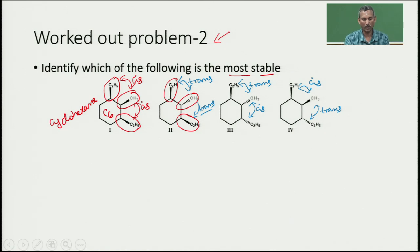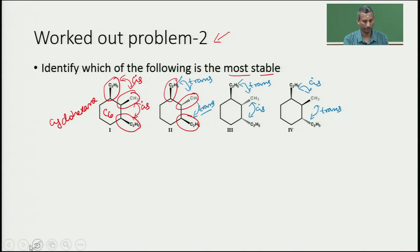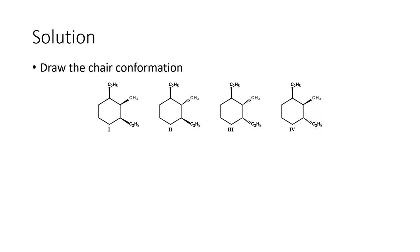Overall, one compound has all-cis substituents, one has all-trans, and two have cis-trans combinations. To find the most stable, we draw the chair conformation for all compounds. Let us draw the first chair conformation for compound one.